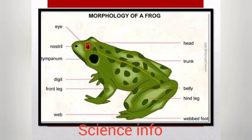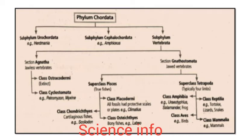If we talk about phylum Chordata, it is divided into three subphyla: Urochordata, Cephalochordata, and Vertebrata. Vertebrates contain Agnatha and Gnathostomata. Agnatha contains class Ostracodermi and class Cyclostomata, while Gnathostomata contains superclass Pisces and Tetrapoda. Pisces contain class Placodermi and class Osteichthyes.